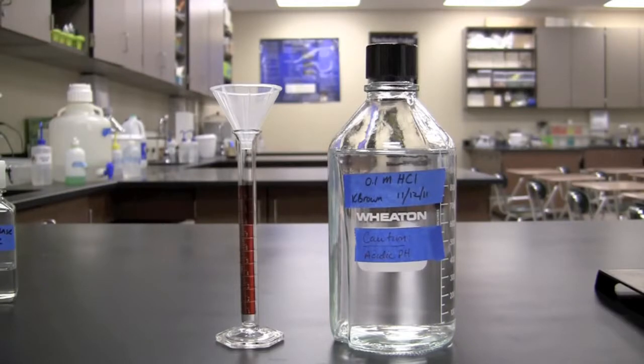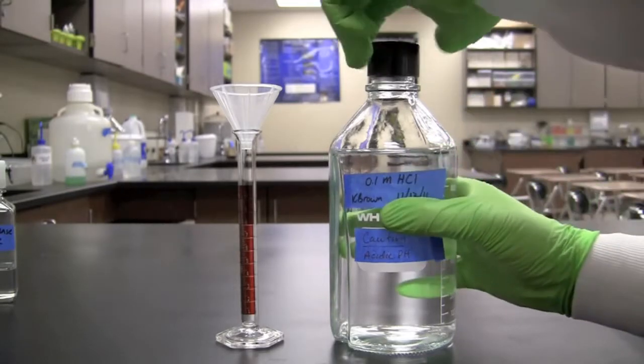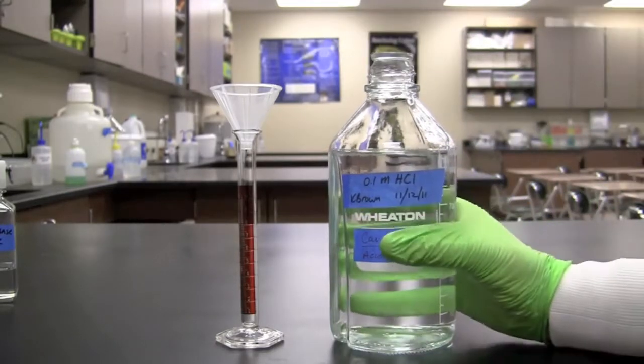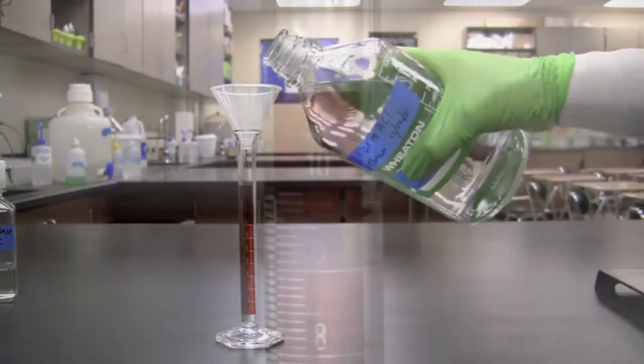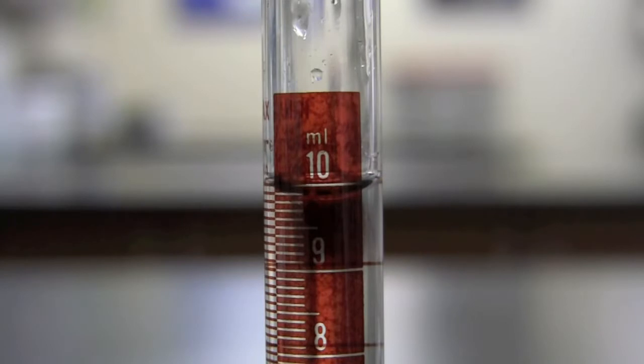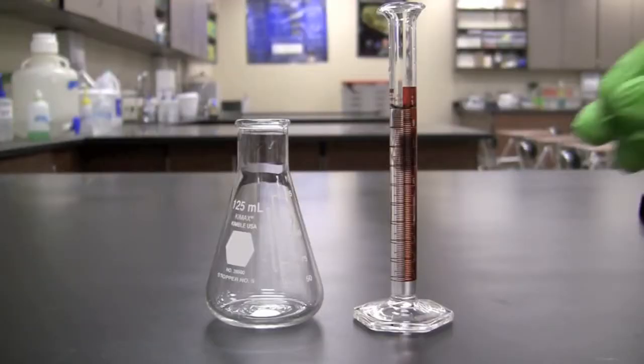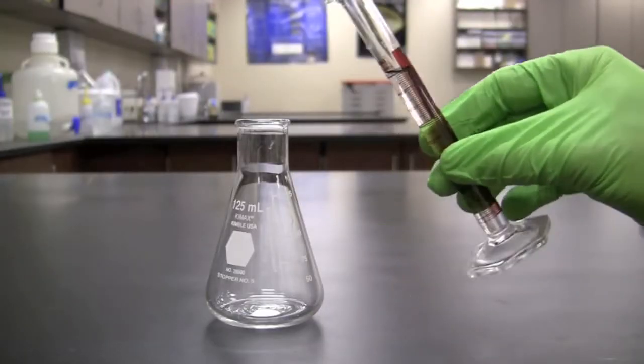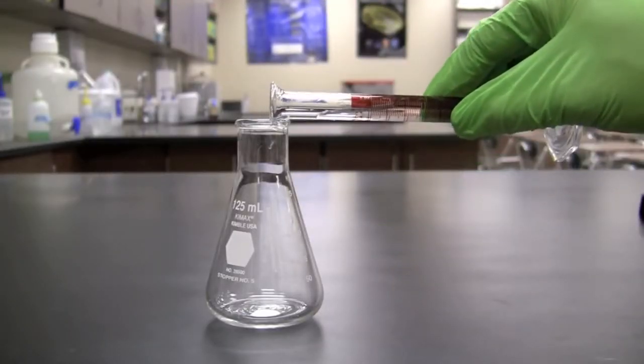Next measure 10 milliliters of 0.1 molar hydrochloric acid using a graduated cylinder. Pour the 10 milliliters of hydrochloric acid into a flask.